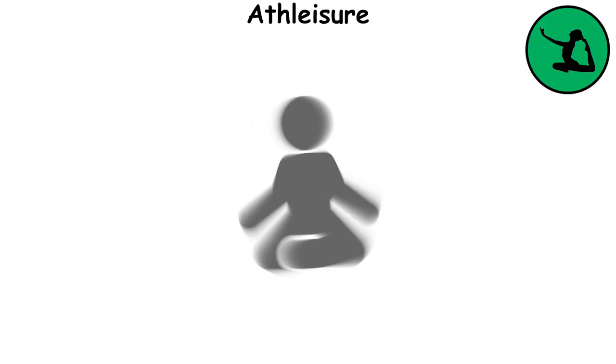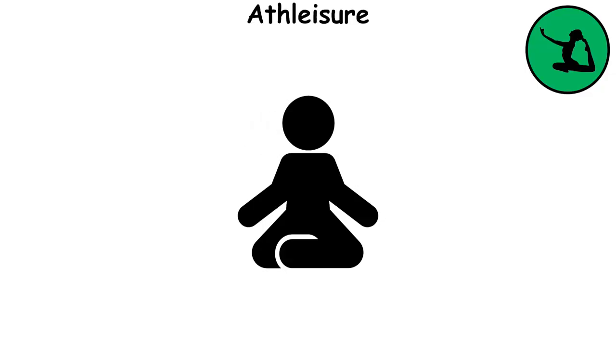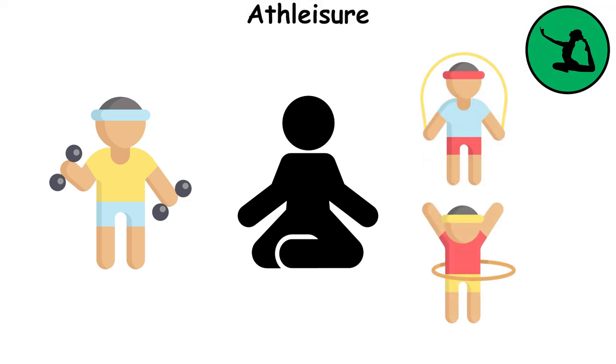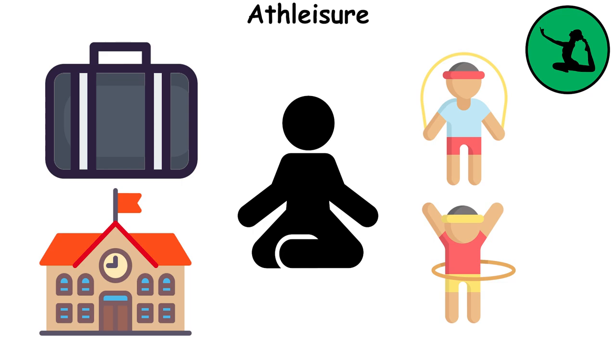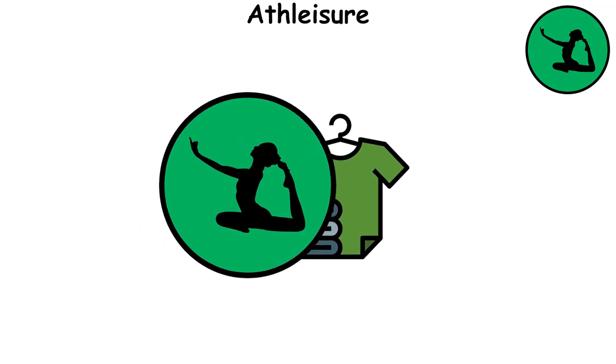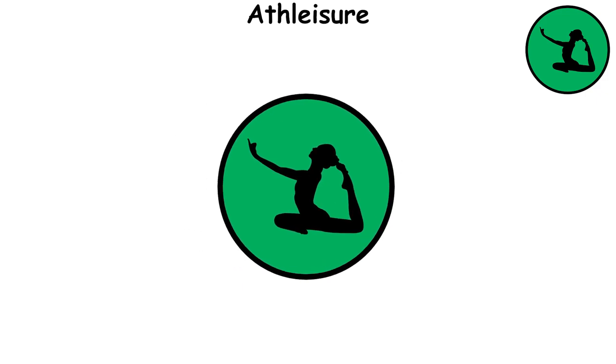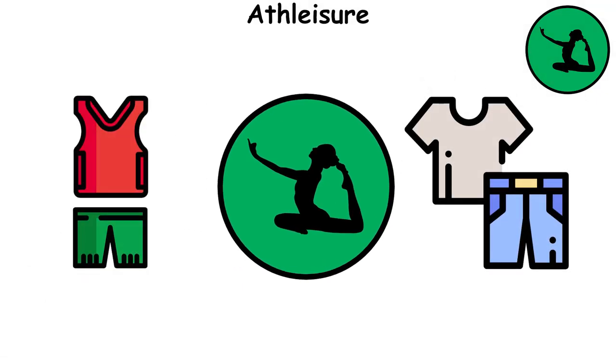Athleisure style is all about comfort. It's about wearing clothes that are designed for workouts and other athletic activities in other settings, such as at the workplace, at school, or at other casual or social occasions. This style has taken the fashion world by storm, blurring the lines between athletic wear and everyday clothing.